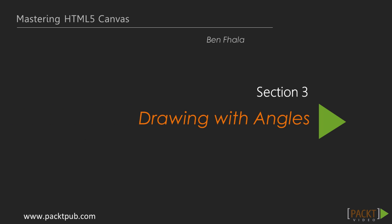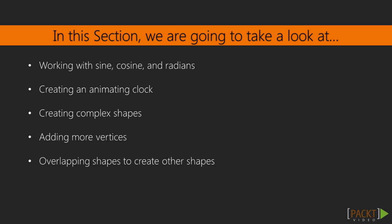This section is going to be dedicated completely to angles, and more specifically the three main topics: radians, cosine, and sine. Through this section we're going to get introduced to those concepts, create together an animating clock using that knowledge, and create a lot more complex shapes using the capabilities behind sine, cosine, and radians. By the end of this session you'll know how to create even stars with multiple points.